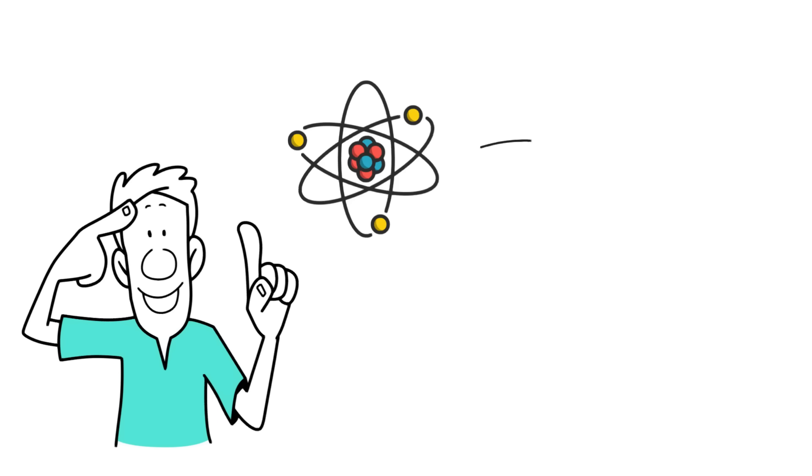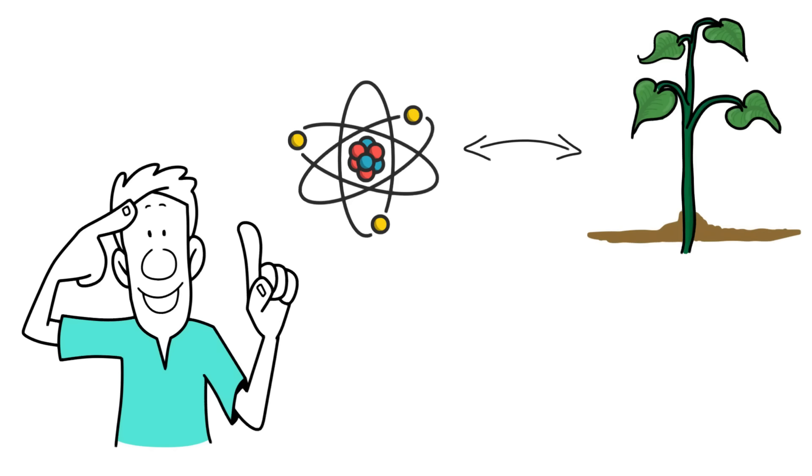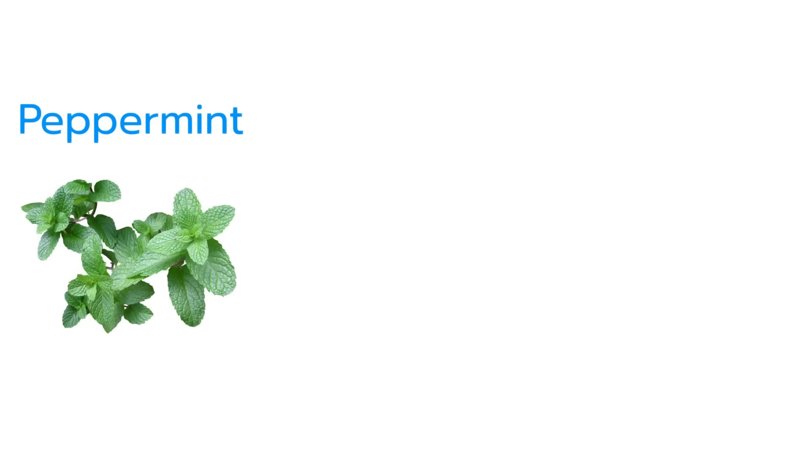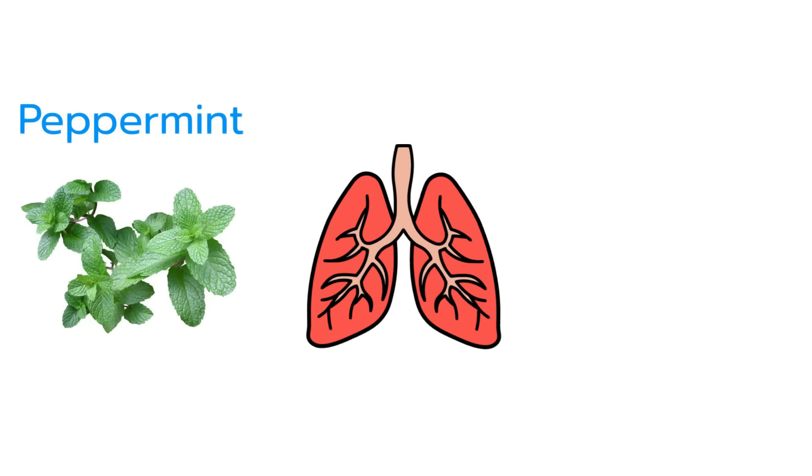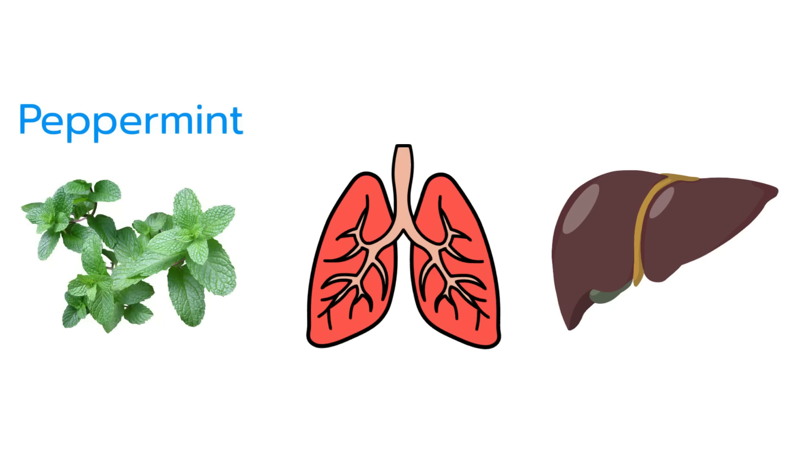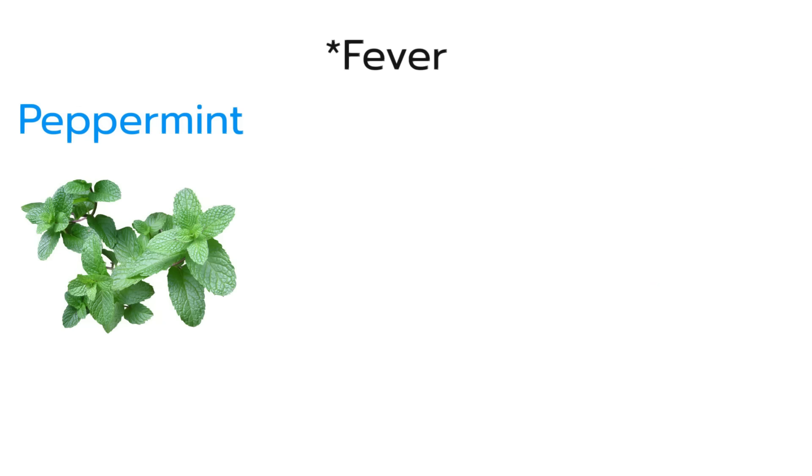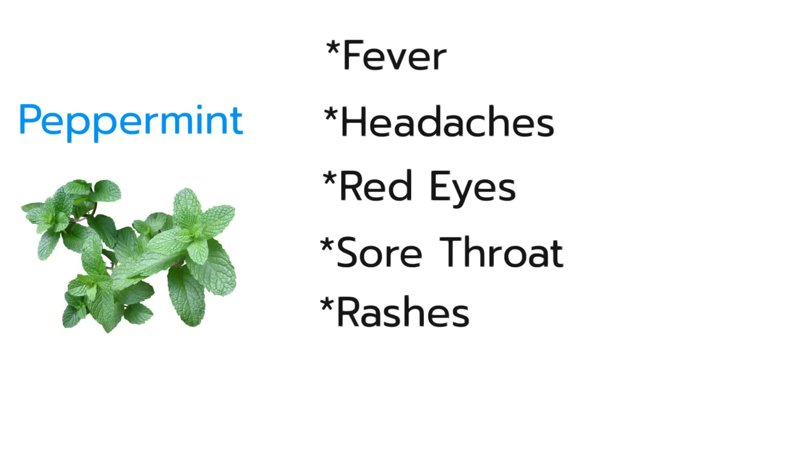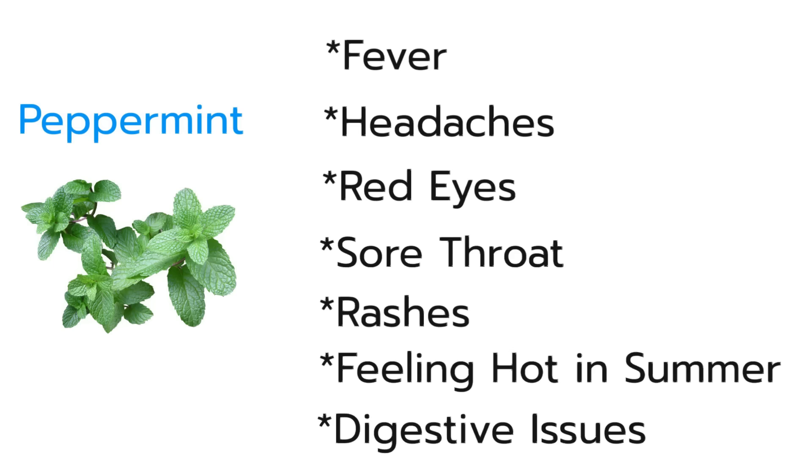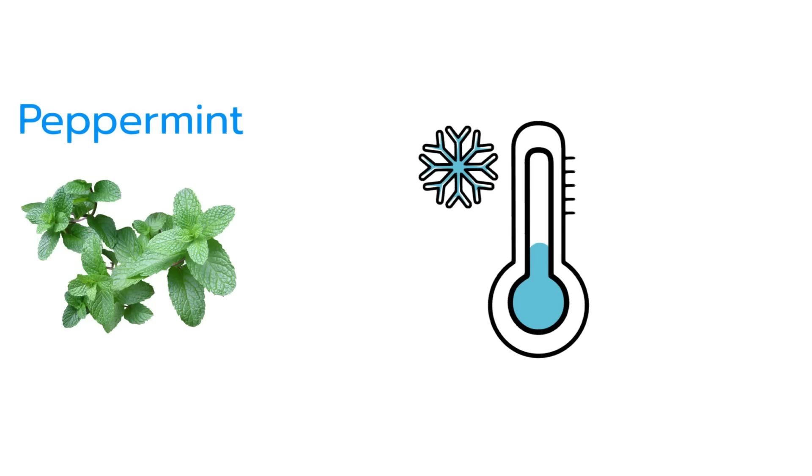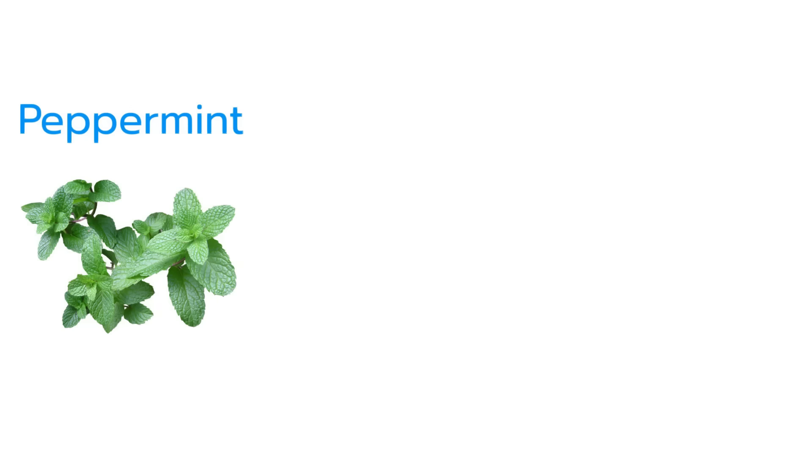The first herb that we will look at is peppermint. Peppermint is beneficial for the lungs and liver and is good for things like fever, headache, red eyes, sore throat, rashes, and all over feeling hot in the summertime with digestive issues. In herbal medicine we often associate peppermint as a cooling herb, but why would that be?